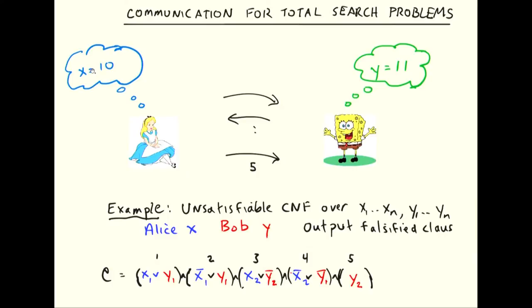Another problem I'll come back to is the total search problem associated with an unsatisfiable CNF formula. There's a fixed unsatisfiable conjunctive normal form formula — you partition the variables into two halves, give the x-part to Alice and the y-part to Bob. They get an assignment of all variables and want to find a violated clause. It's a total search problem because the formula is unsatisfiable, so there's always at least one clause that's false.